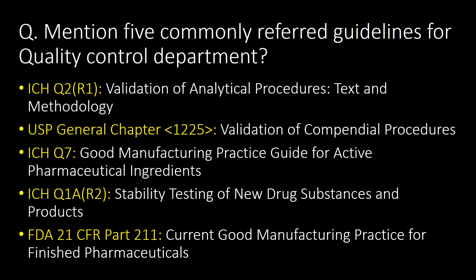Mention five commonly referred guidelines for the quality control department. The five commonly referred guidelines are: first, ICH Q2(R1); second, USP General Chapter 1225; third, ICH Q7; fourth, ICH Q1A(R2); and fifth, FDA 21 CFR Part 211.